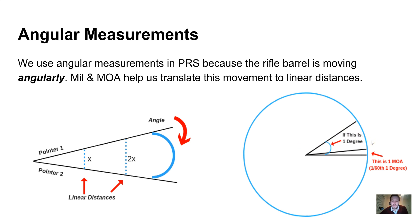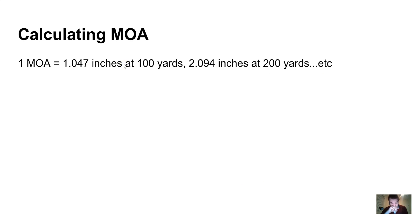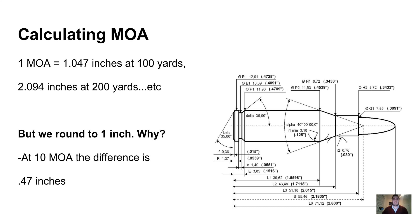For calculating MOA, it's pretty straightforward. The exact specification is that at 100 yards, one MOA is 1.047 inches, at 200 yards it's 2.094 inches, etc. However, we're going to round to one inch. This is completely up to you, but if you're just beginning, I would suggest sticking to one inch because it makes the math a lot easier.